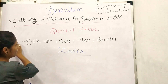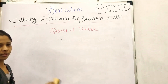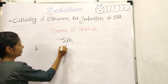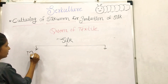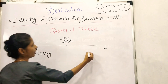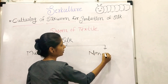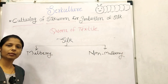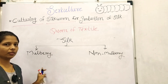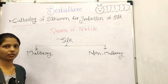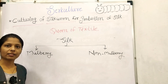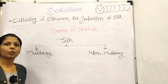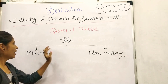There are two types of silk: mulberry silk and non-mulberry silk. Mulberry silk means those silkworms that feed only on mulberry leaves. Non-mulberry silkworms feed on other leaves like castor leaves or stone leaves. Examples of non-mulberry silkworms are the tassar silkworm, the eri silkworm, and the muga silkworm.